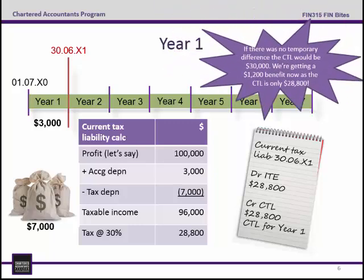So if there was no temporary difference, the current tax liability would have just been $30,000. If we didn't have that depreciation difference between tax and accounting, we'd just have profit of $100,000 at a tax rate of 30%, giving a current tax liability of $30,000. But because we've got this temporary difference relating to our machine, we've got a current tax liability of $28,800 — so we're getting a $1,200 benefit now.